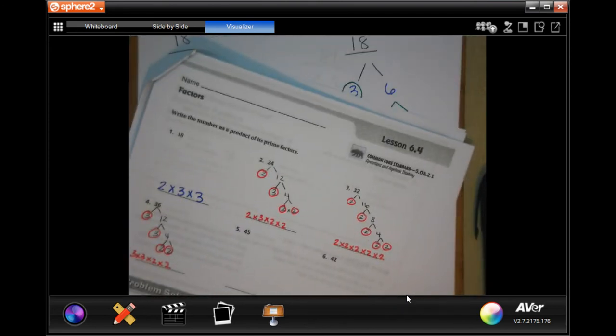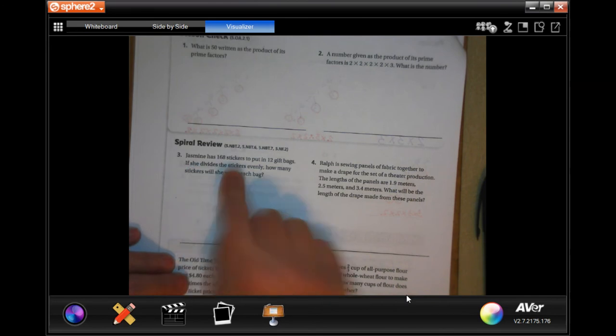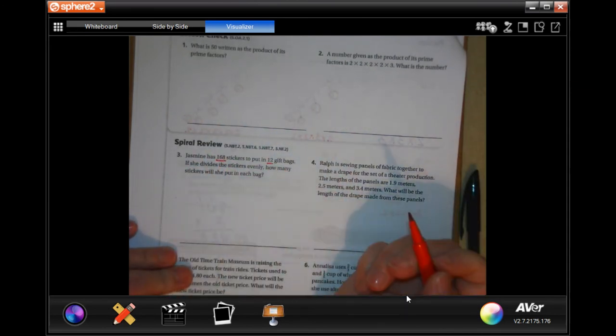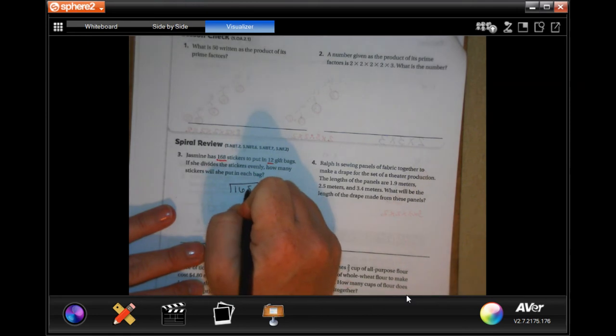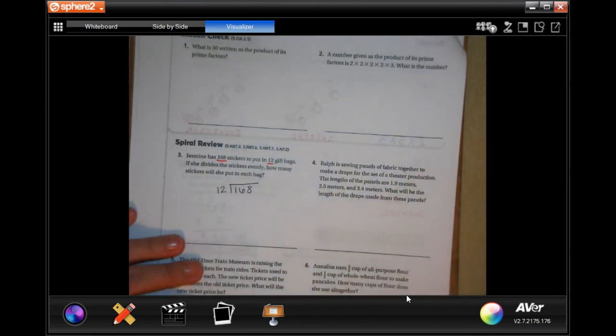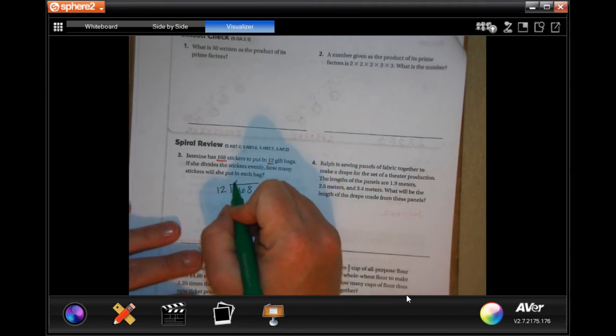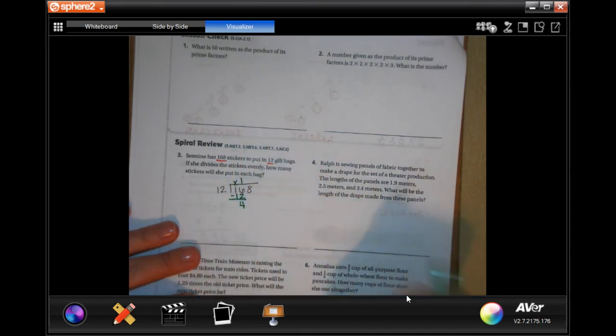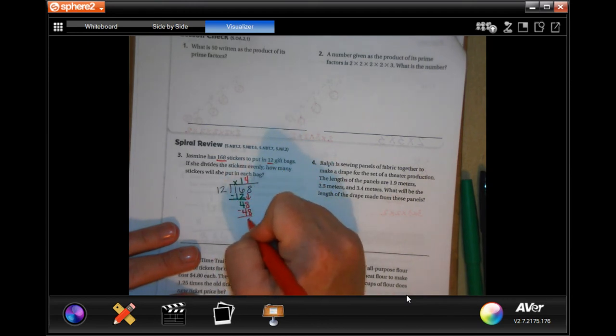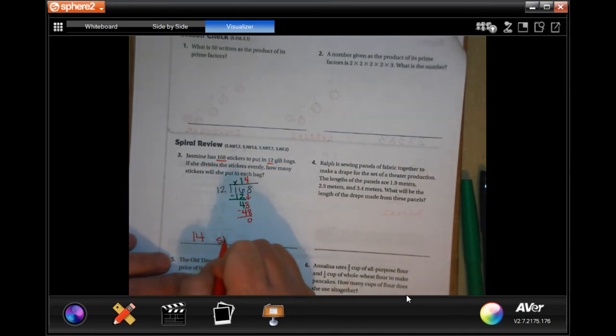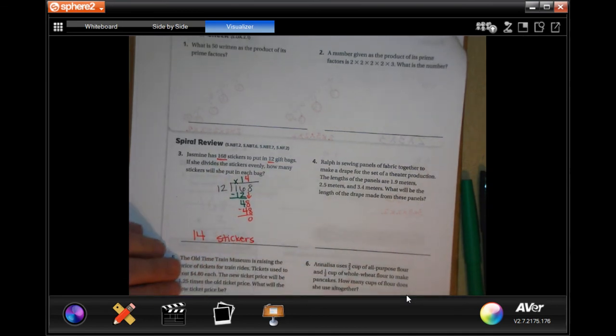You guys are going to do the lesson check on the back. And we are going to do the follow-up review. Jasmine has 168 stickers to put into 12 gift bags. If she divides the stickers evenly, how many stickers will she put in each bag? Well, 168 divided by 12. 12 is not going to go into one. So, we'll go into 16 one time. I will have four left over. Now, four is smaller than 12. So, I can bring down my eight. And 12 goes into 48 four times. Four times 12 is 48. It's zero. So, 14 stickers.